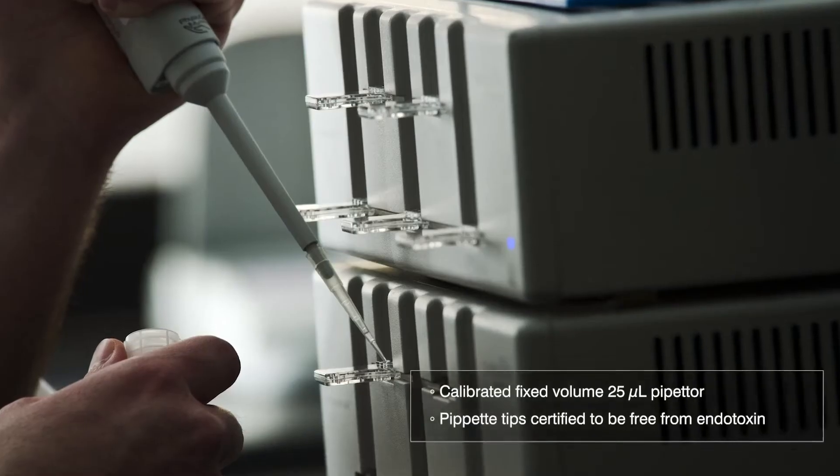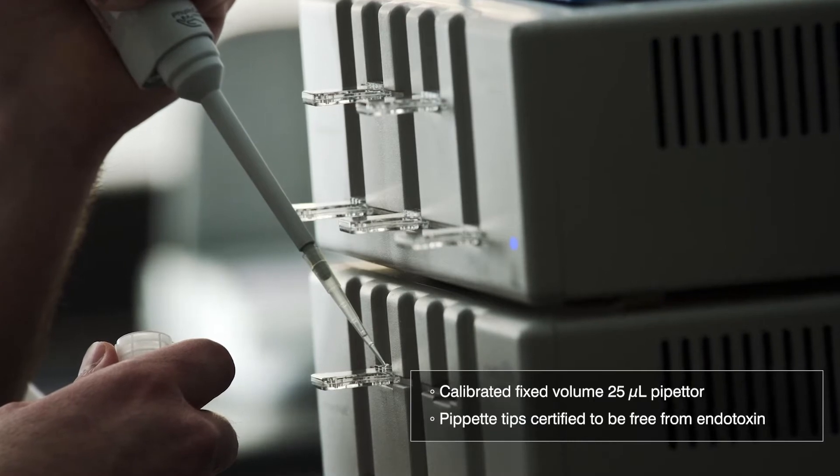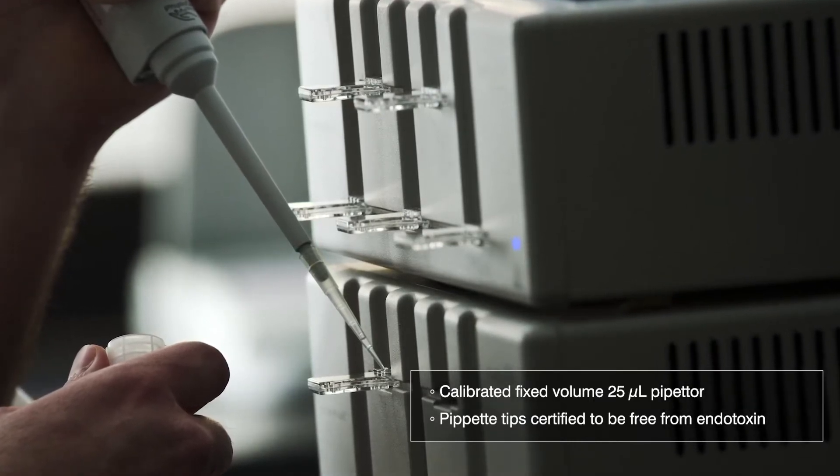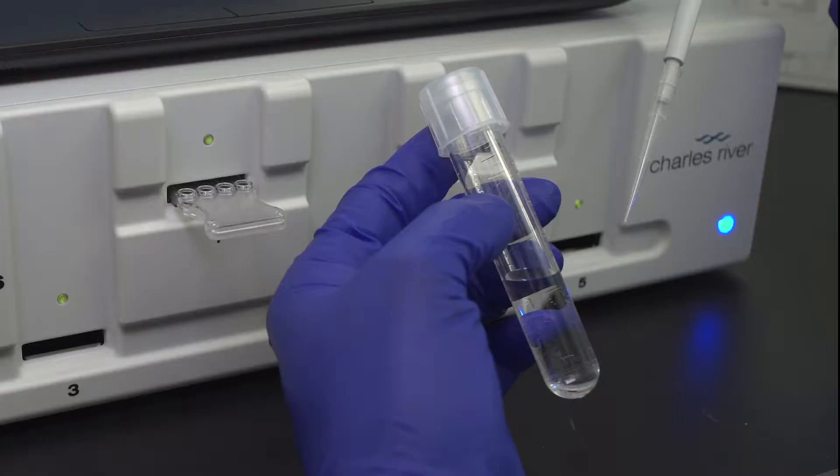In addition to your NextGen MCS reader, to begin testing, you will need a calibrated fixed-volume 25-micro-liter pipetter, pipette tips certified to be free from endotoxin, EndoSafe cartridges with the certificate of analysis, and your sample.